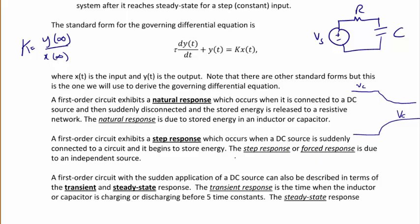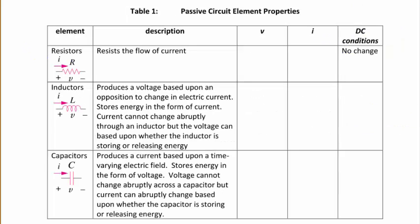A first order circuit with the sudden application of a DC source can also be described in terms of the transient and steady state response. The transient response is the time when the inductor or capacitor is charging or discharging before the five time constant expires. The steady state response is the value that it reaches after a long time. The transient response is the temporary response that will die out with time, while the steady state response is the permanent part that will occur after a long time.